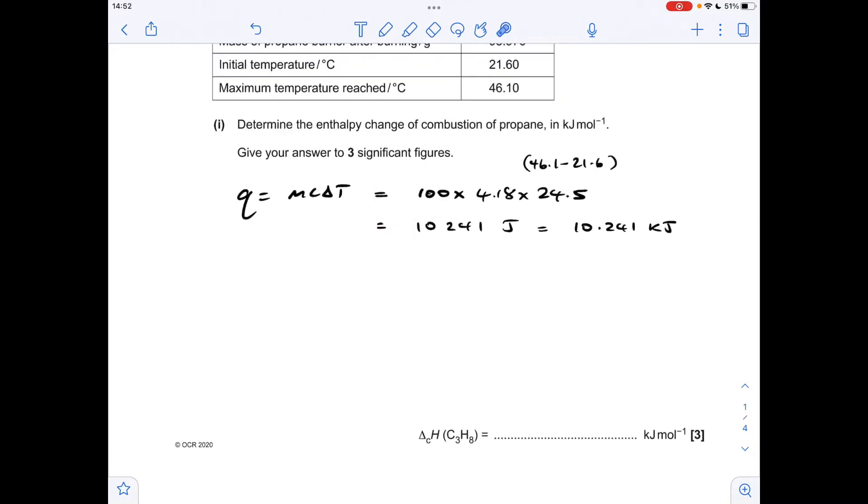So the first thing we do is calculate the energy going into the water from the combustion of the propane, so Q equals MC delta T. 100 cm cubed of water was used, so we're assuming that's going to be 100 grams. C is 4.18 for water, and the temperature change is the difference between the maximum temperature reached and the initial temperature. So that comes out at 10,241 joules, which is 10.241 kilojoules.